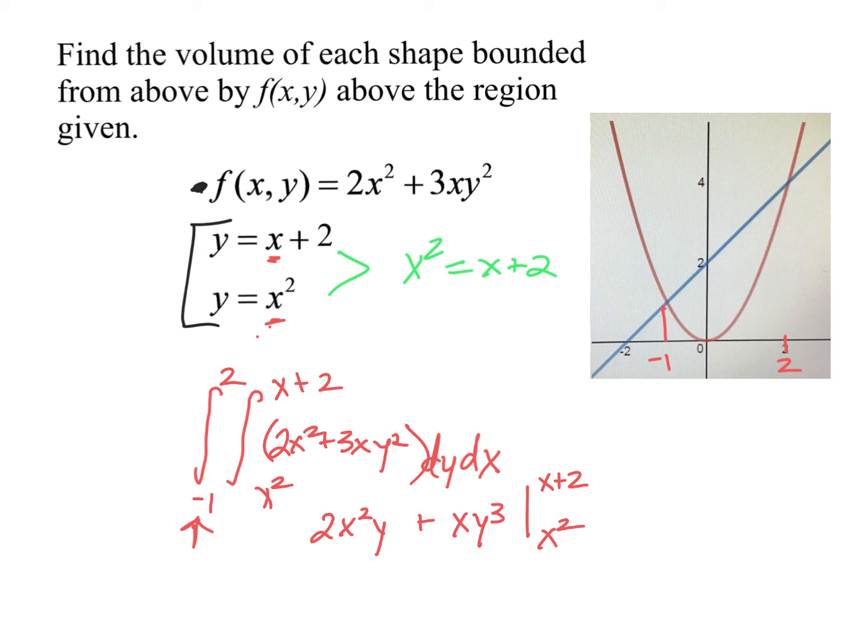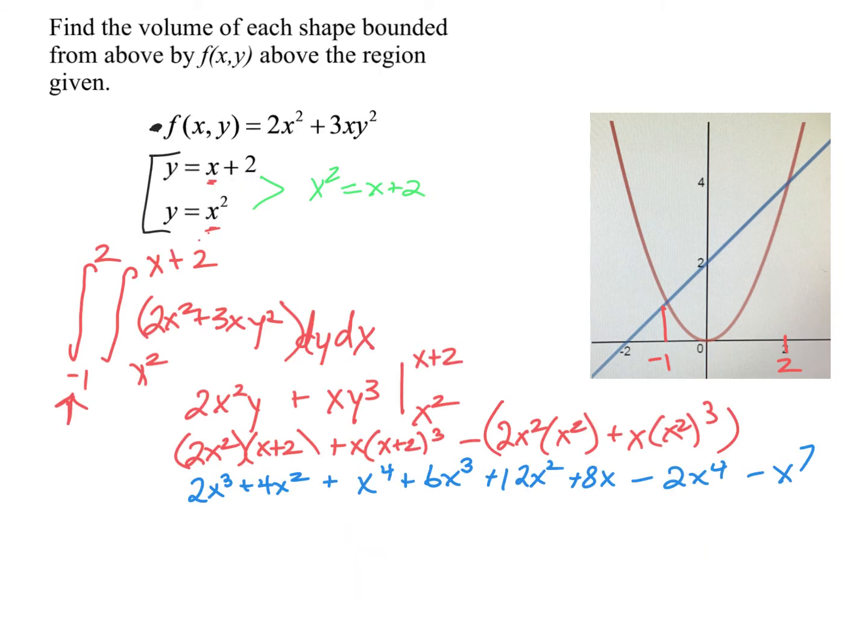So this is just that first integral. So let's see, if I plug in x plus 2, I've got 2x squared times x plus 2 plus x times x plus 2 cubed. Minus, and then I plug in x squared. So 2x squared times x squared. And plus x times x squared cubed. All right, I've just quickly actually expanded that out. Let me simplify that now.